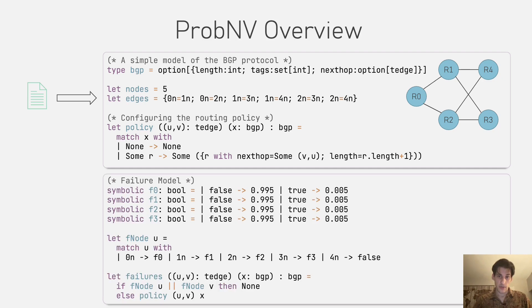Next, we will define a failure model for the network. In this case, we declare four symbolic Boolean values, which we will use to denote whether a node has failed, which we assume happens with probability 0.005.